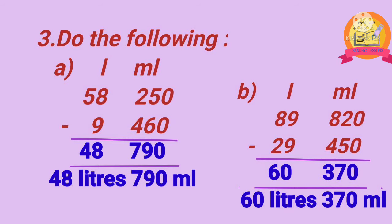Third problem: do the following subtractions. Problem A: subtract 9 liters 460 milliliters from 58 liters 250 milliliters. After subtraction, we get 48 liters 790 milliliters. Problem B: subtract 29 liters 450 milliliters from 89 liters 820 milliliters. After subtraction, we get 60 liters 370 milliliters.